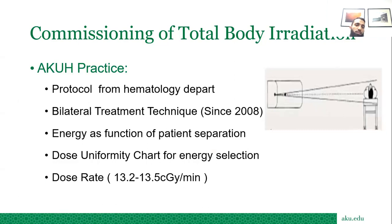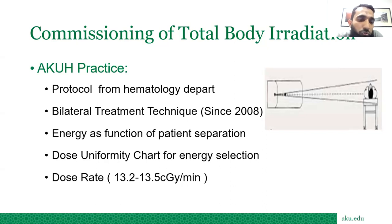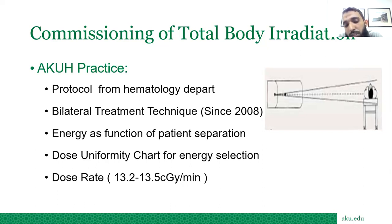Confining discussion to AQH practice, we have been using the bilateral treatment technique since 2008. We choose energy as a function of patient separation and use a dose uniformity chart to select the best energy. Here the dose rate ranges from 13.2 to 13.5 cGy per minute.